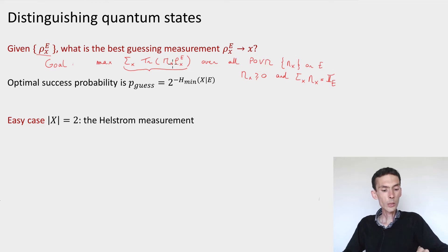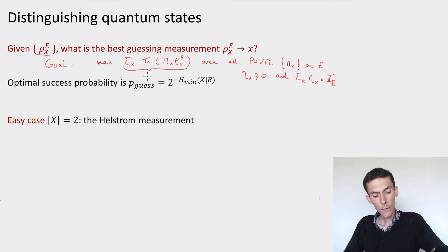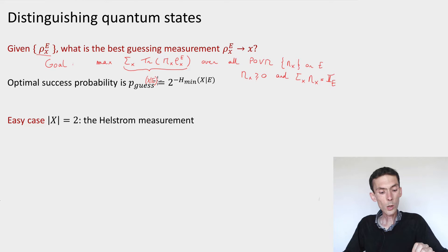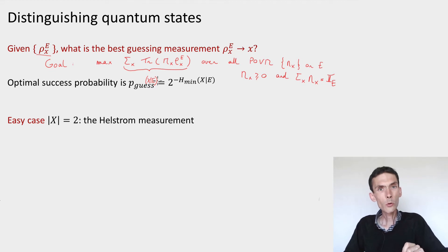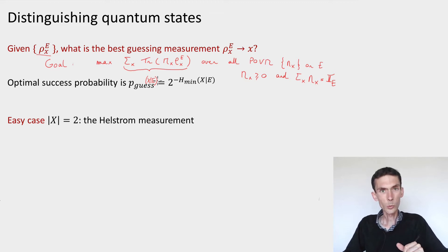This is an expression you've already encountered — it's exactly the guessing probability of x given E, which you saw when you discovered the min entropy. So the quantity we're trying to estimate is 2 to the minus min entropy of x given E. But what we want here is not to compute the quantity itself, but to find the optimal measurement that achieves this optimal guessing probability. This problem is hard in general.